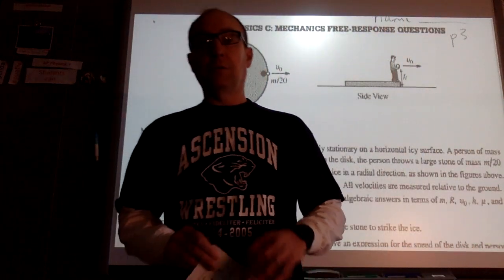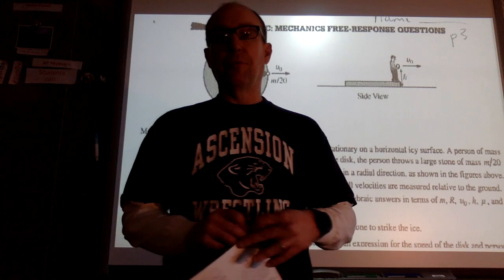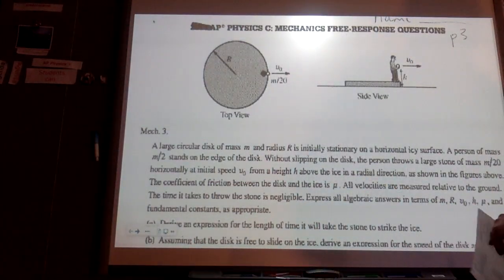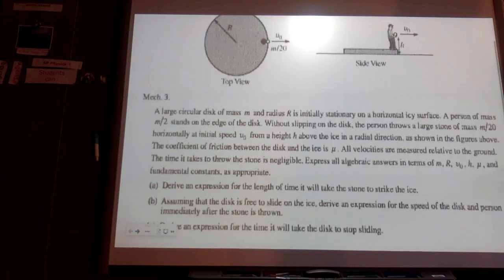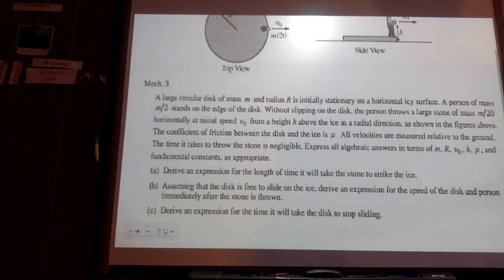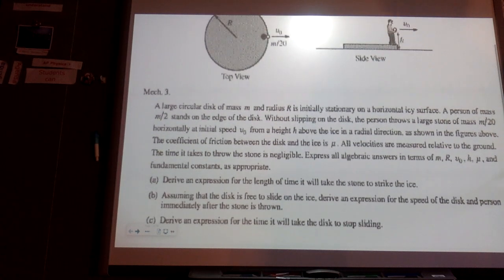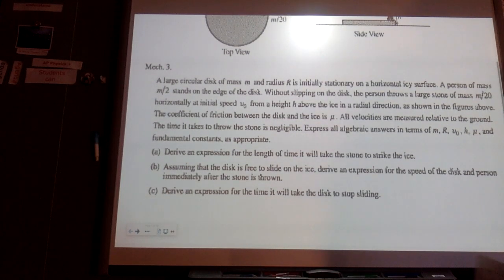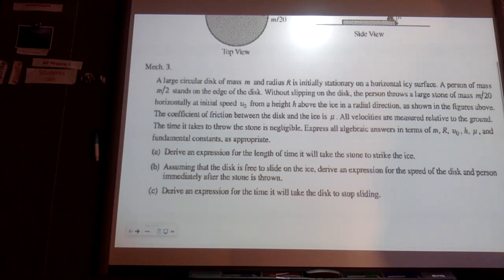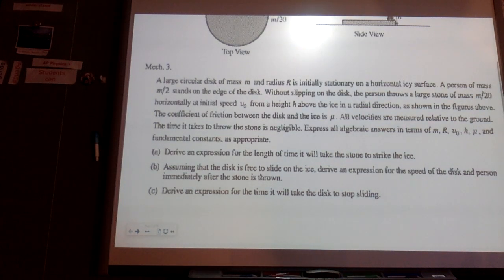We're going to go over some more momentum practice for review. A large circular disc of mass M and radius R is initially stationary on a horizontal icy surface. A person of mass M/2 stands on the edge of the disc. Without slipping on the disc, the person throws a large stone of mass M/20 at initial speed V-naught from a height H above the ice in its radial direction. The coefficient of friction between the disc and the ice is mu. All velocities are measured relative to the ground. The time it takes to throw the stone is negligible. Express all answers in terms of M, R, V-naught, H, mu, and fundamental constants. Derive an expression for the length of time it will take the stone to strike the ice.